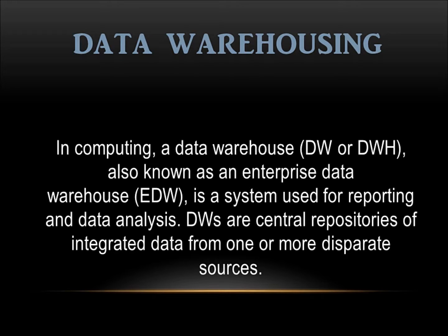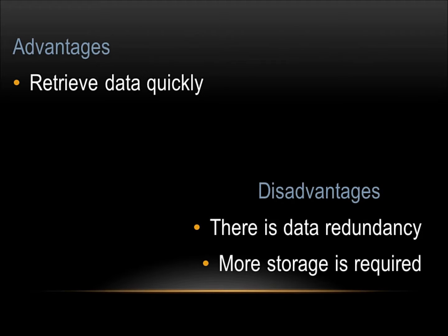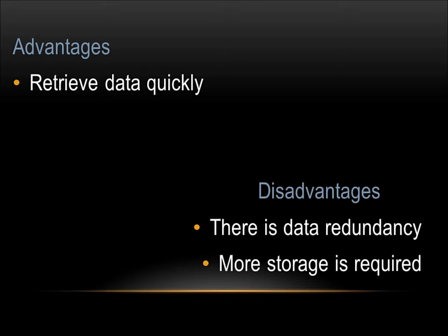A data warehouse is a system used for reporting and data analysis. Like all databases, it has its advantages and disadvantages. Some advantages include being able to retrieve data quickly, while a disadvantage is data redundancy, meaning you need more storage. Within an organization, you will have operational systems which all have a properly normalized database. To not interfere with the operational data, you make a copy and put it in a staging area, where data is put into the same format, which is then transferred to the data warehouse.